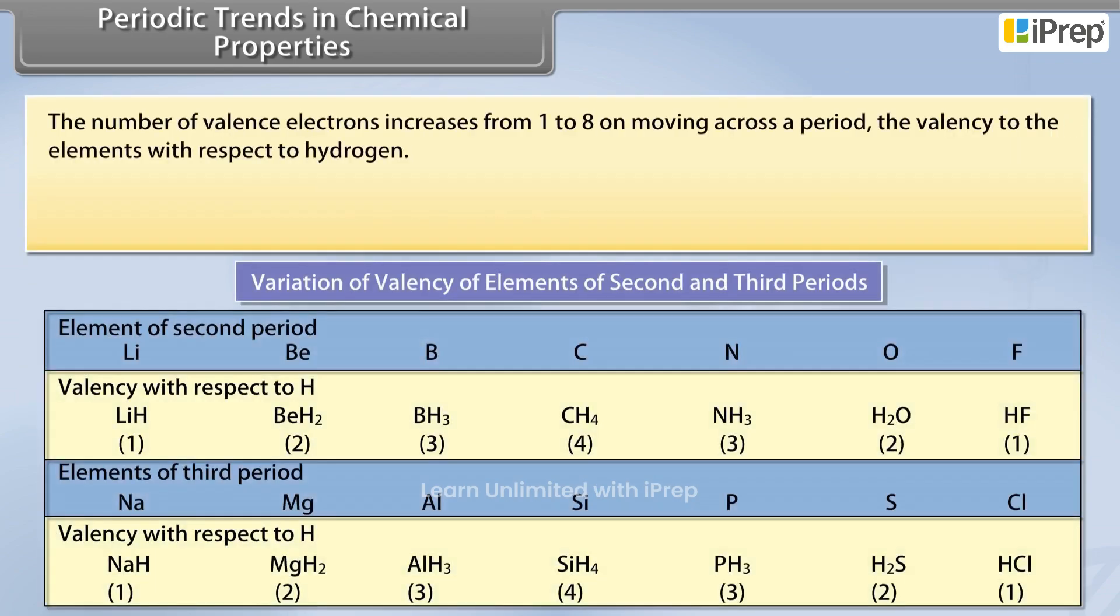The number of valency electrons increases from 1 to 8 on moving across a period. The valency to the elements with respect to hydrogen.